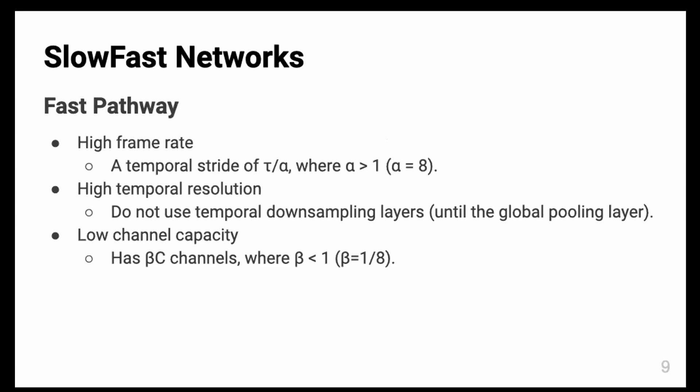Fast pathway has three attributes: high frame rate, high temporal resolution, and low channel capacity. For the high frame rate, it has a temporal stride of τ/α where α is bigger than 1. The authors typically used α as 8.